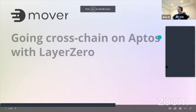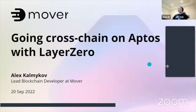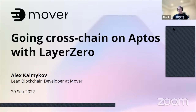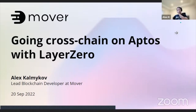Hopefully everybody can hear me. Let me introduce myself first — my name is Alex, and I'm a lead blockchain developer at Mover. Mover is the first liquidity bridge that's going to connect Aptos with both EVM and non-EVM chains. And today we're going to talk about one of the technologies that we use at Mover, which is Layer Zero cross-chain messaging.